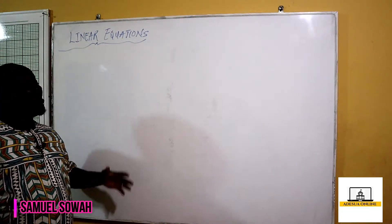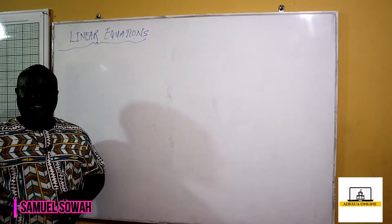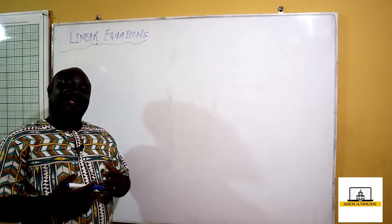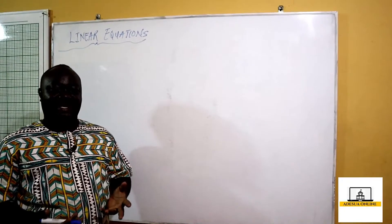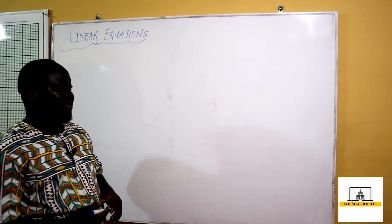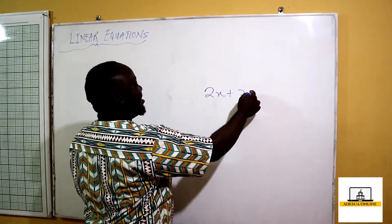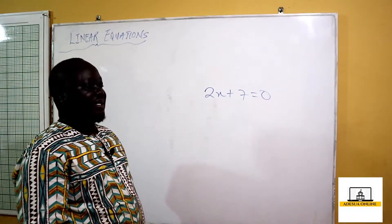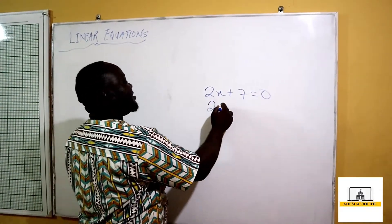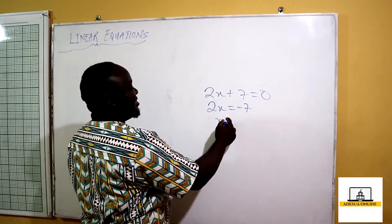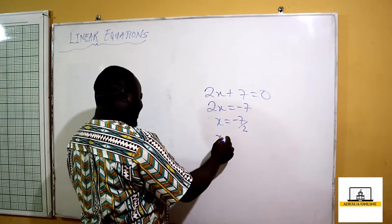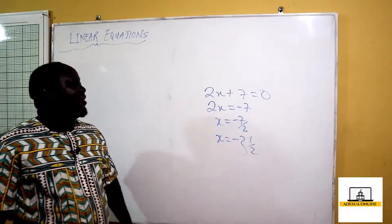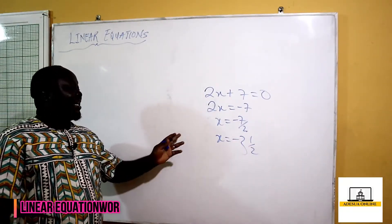Our topic for today is linear equations. A linear equation has an exponent of one. For example, 2x plus 7 equals zero is a linear equation. We rearrange to get 2x equals negative 7, so x equals negative 7 over 2, which gives us negative 3 and one-half. This is a linear equation which has been solved.